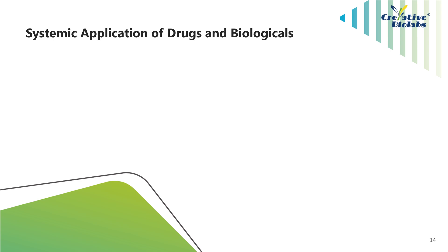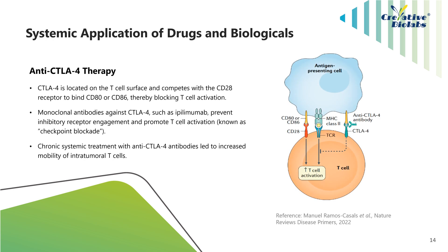In addition, there are numerous means by which immune cell migration can be altered using drugs and biologicals applied systemically. Numerous studies have reported effects on T-cell migratory behavior induced by therapeutics not originally designed for this objective, including both immunotherapeutic agents and standard chemotherapies. For example, CTLA4 is a T-cell inhibitory receptor that competes with CD28 to bind CD80 or CD86, blocking T-cell activation. Monoclonal antibodies against CTLA4, such as ipilimumab, prevent inhibitory receptor engagement and promote T-cell activation. Scientists found that chronic systemic treatment with anti-CTLA4 antibodies led to increased mobility of intratumoral T-cells.